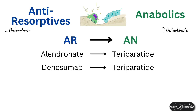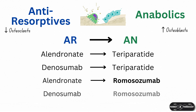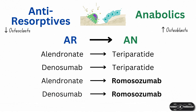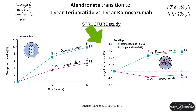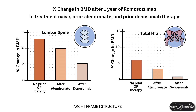Looking at transitions to the other anabolic, romosozumab—the most potent at increasing BMD but limited to one year—starting with alendronate to romosozumab. In the STRUCTURE study, switching from alendronate to romosozumab after one year gave 10% BMD gains at the spine and around 2–3% at the hip. In comparison, romosozumab gains in treatment-naive patients after one year are around 14% at the spine and 7% at the hip. So there is some blunting, but still decent BMD gains at both locations.